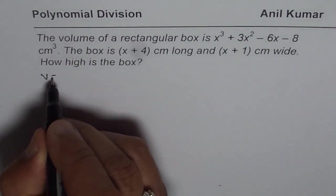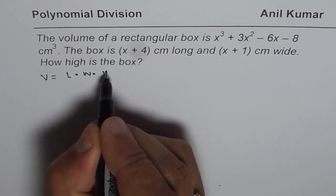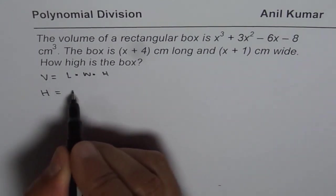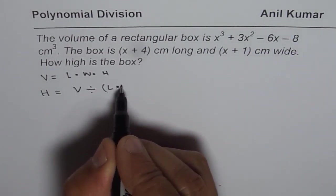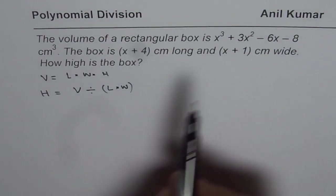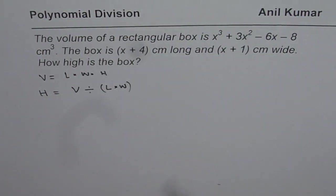Now, we know volume equals length times width times height. Since we want to find the height, we need to divide volume by length times width. That is the concept. We know the volume.